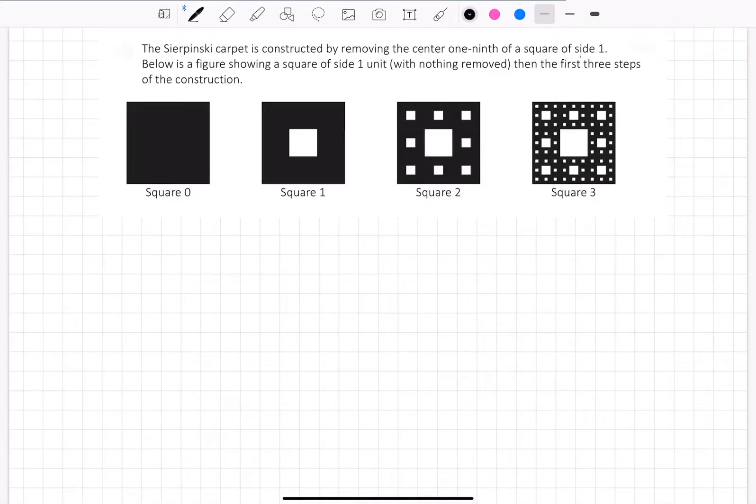Welcome. In this video, I'm going to get you all started on this problem here. The Sierpinski carpet is constructed by removing the center one-ninth of a side of square one. Below is a figure showing a square of side one unit, that's here, with nothing removed, then the first three steps of the construction.